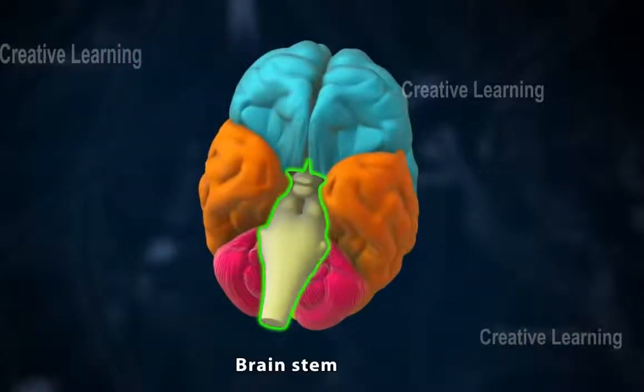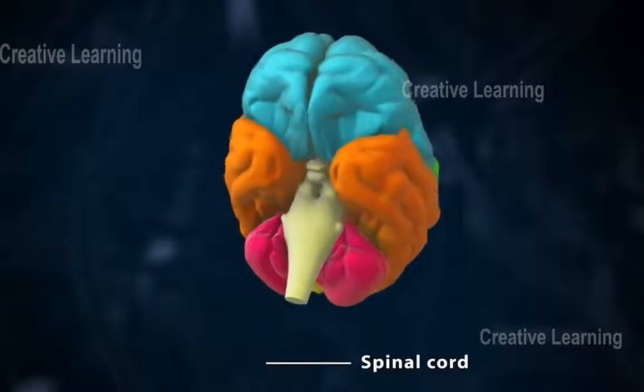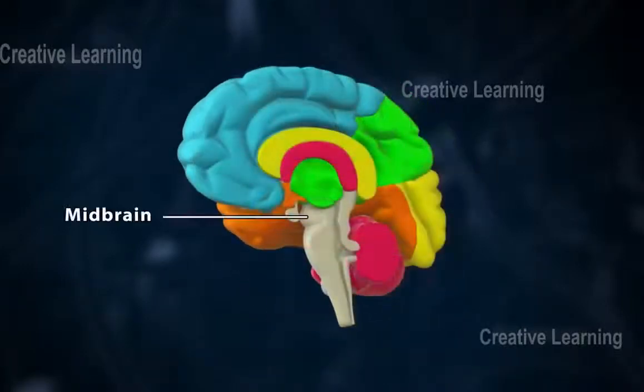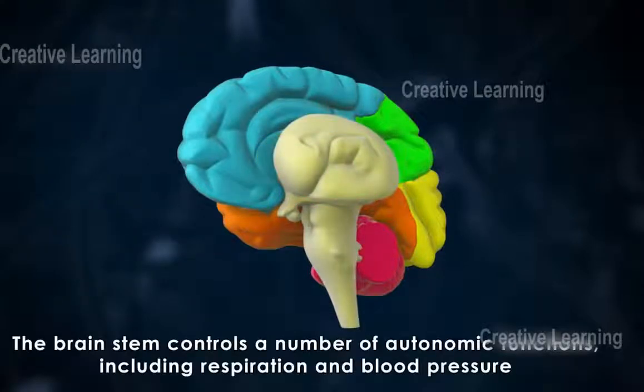The brain stem is located beneath the cerebrum and in front of the cerebellum. It connects the brain with the spinal cord and is composed of the midbrain, pons, and medulla oblongata. The brain stem controls a number of autonomic functions, including respiration and blood pressure.